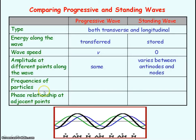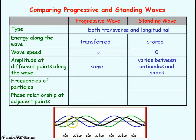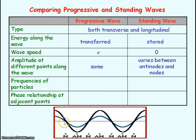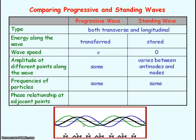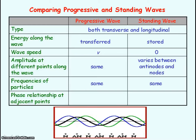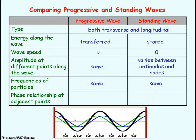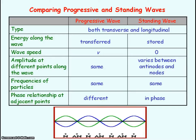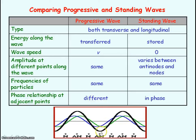Regarding the frequency of oscillations: the frequency of the standing wave is the same as the frequency of the two progressive waves that make it up. Each particle along the standing wave has the same frequency. However, looking at the phase relationship between adjacent points along a progressive wave, they are slightly out of step with each other — they have different phase relationships. But for the standing wave, adjacent points are moving in step with each other; they have different amplitudes, but they are in phase with each other.